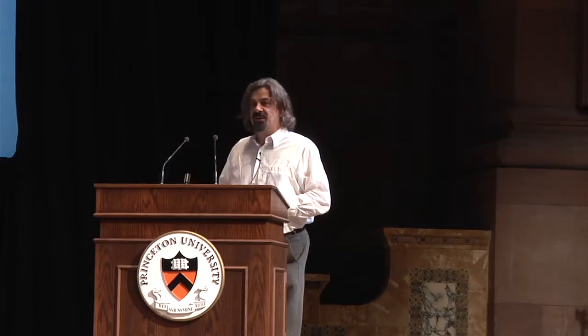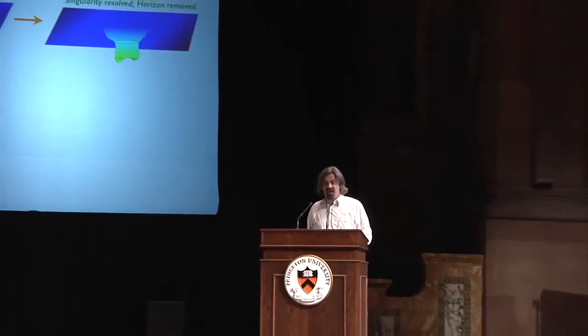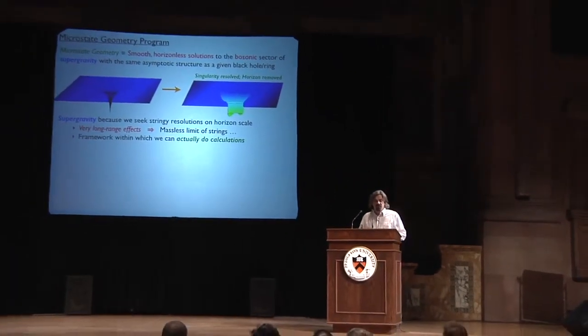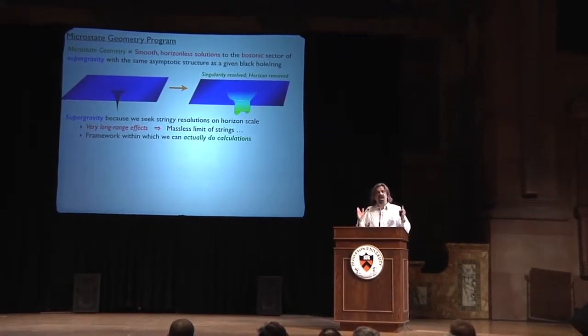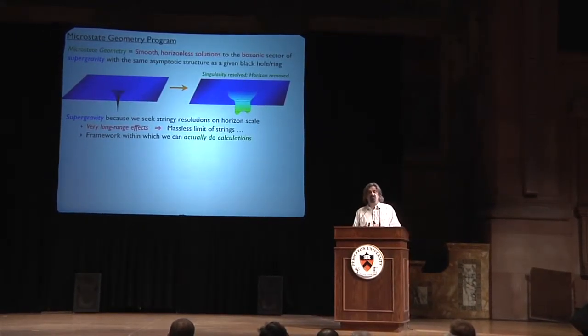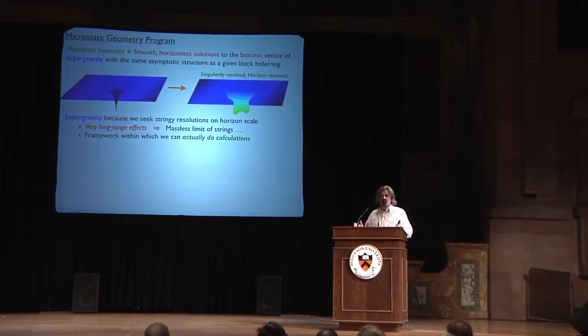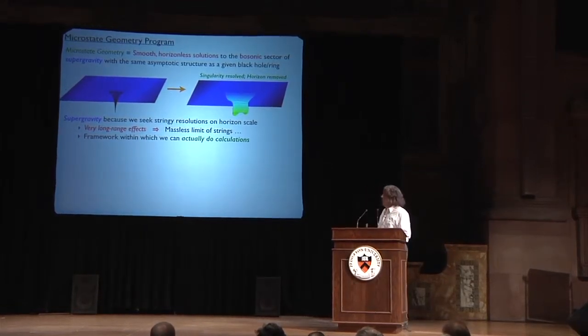Now, getting down to what a microstate geometry really is. What's a microstate geometry? It means that you've got some smooth horizonless solution to the bosonic sector of your favorite supergravity theory with the same asymptotic structure as a given black hole or black ring. You not only resolve the singularity, but you get rid of the horizon entirely. We use supergravity for a couple of reasons. You've got to have a long-range effect. It's got to be horizon scale, so therefore you probably should be looking at the massless sector of string theory. But also, it gives you a framework within which you can actually do calculations.